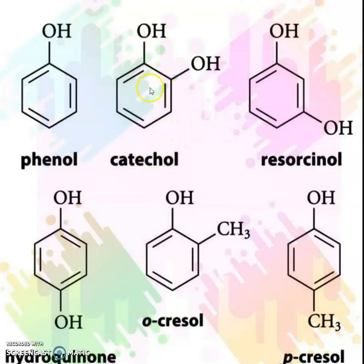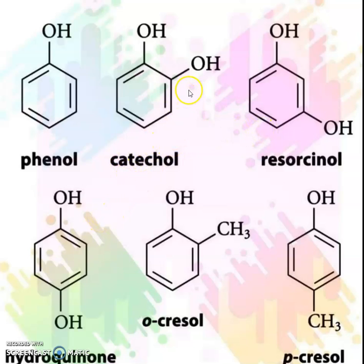So, what is catechol and what is resorcinol? Where are the differences? And hydroquinone — you can see. These three structures help you understand and remember catechol, resorcinol, and hydroquinone. All three compounds have the same molecular formula; only the arrangement and positions of attachment of the second OH group differ. Here: ortho is 1,2-dihydroxy; 1,3-dihydroxy, then we call it resorcinol; 1,4-dihydroxy, then it is called hydroquinone.